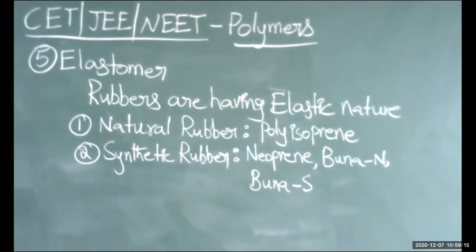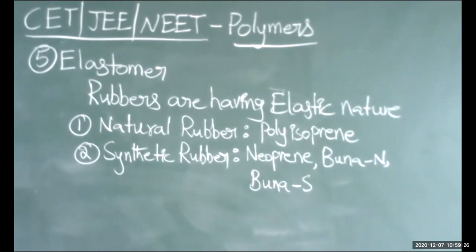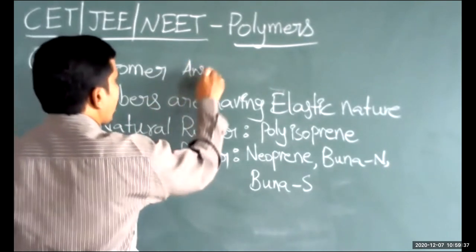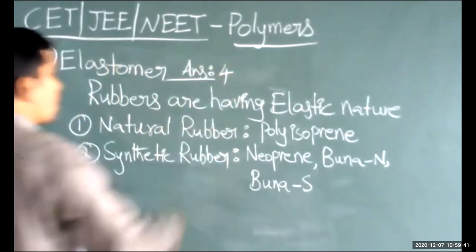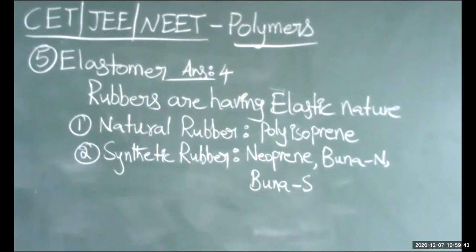Looking at the options for question 5 on page 141: first option buna-N, second option buna-S, third option neoprene — all are examples of elastomers. So the answer for question 5 is the fourth option: all of these.